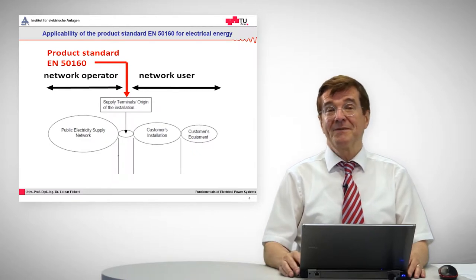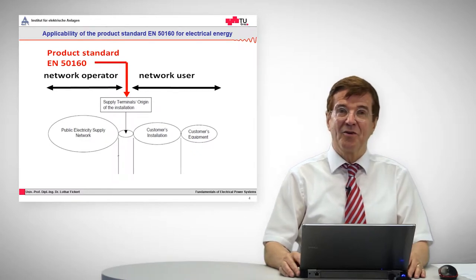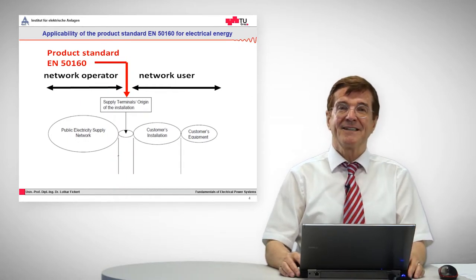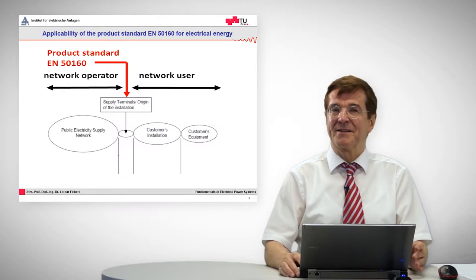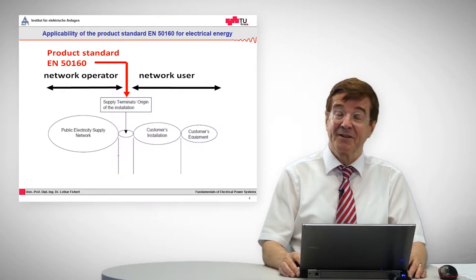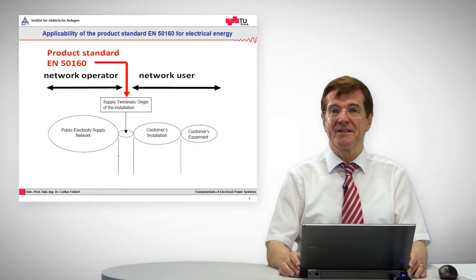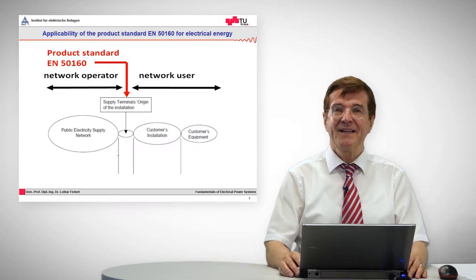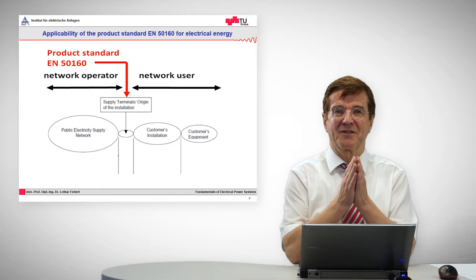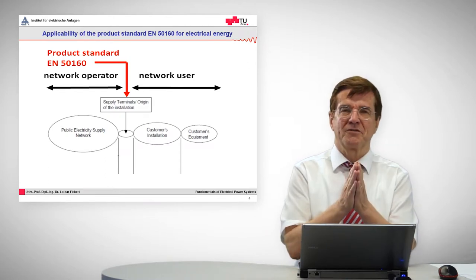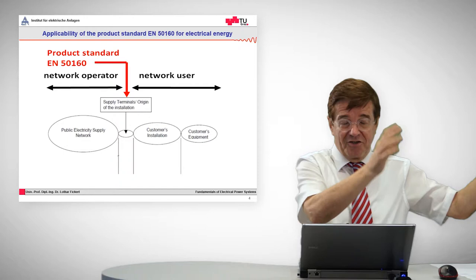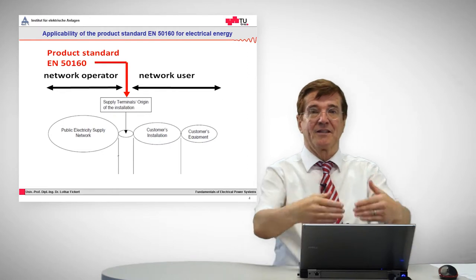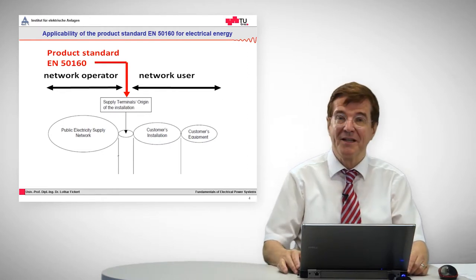Power quality describes the quality of the electrical power, which was defined by the European Union as a product and therefore it must be described by characteristics. The characteristics of power quality are given in the so-called product standard EN 5160, which covers the quality or the properties of electrical energy — the electrical voltage at the point of transition from the generator to the consumer, from the network.